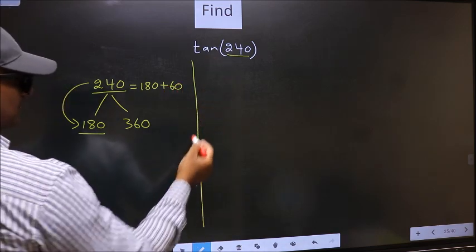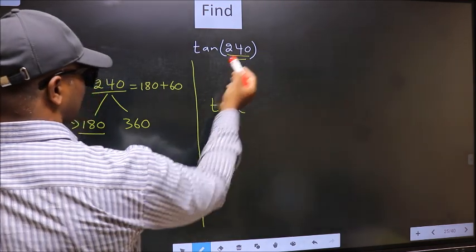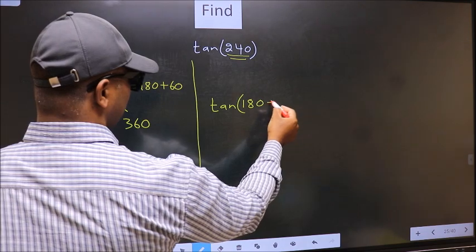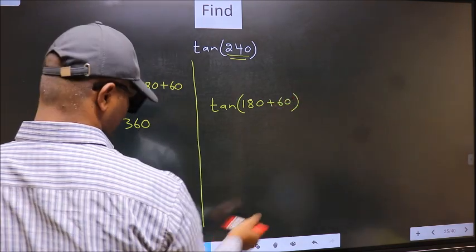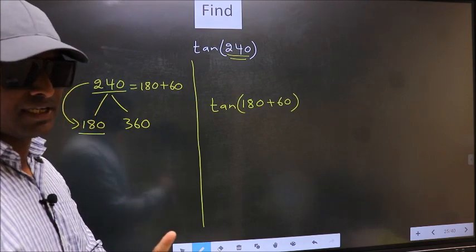So this will become tan. In place of this, we write 180 plus 60. This is your step 1.